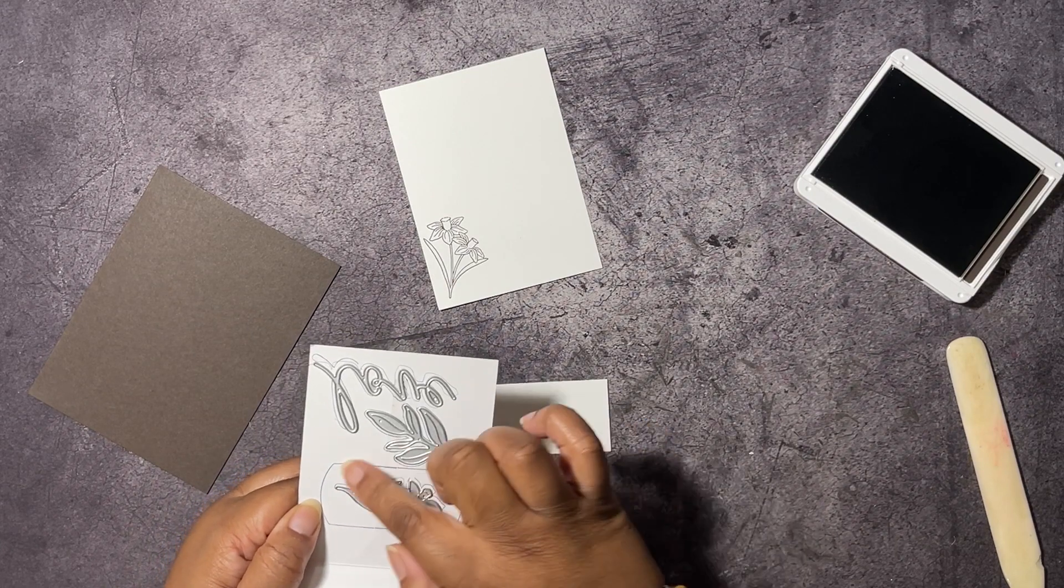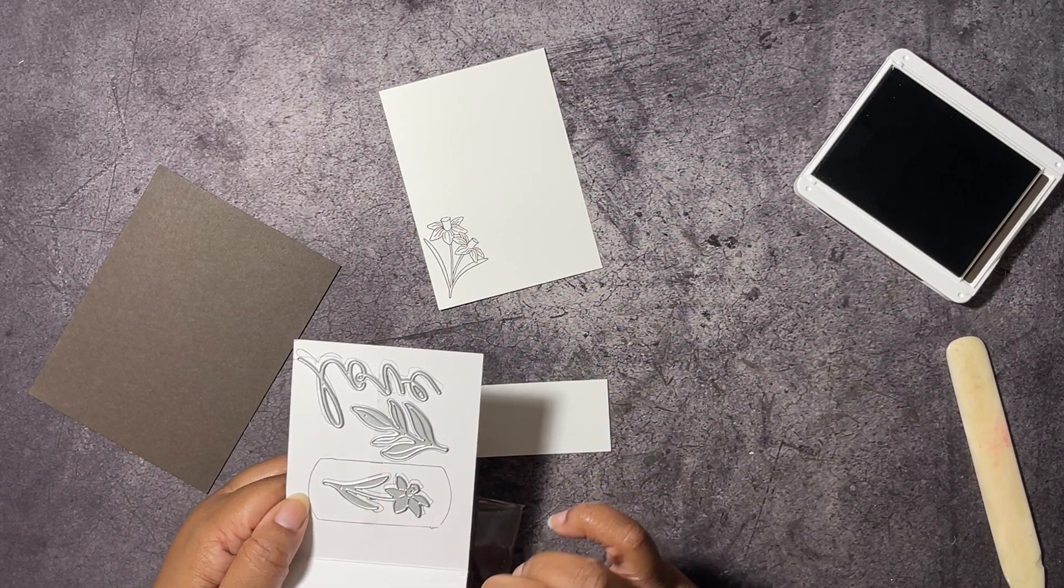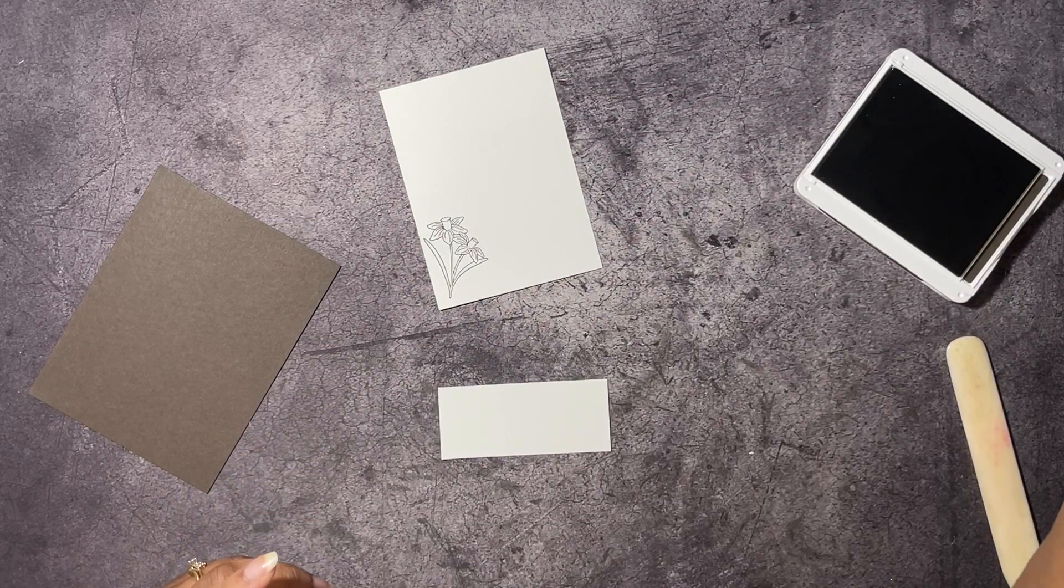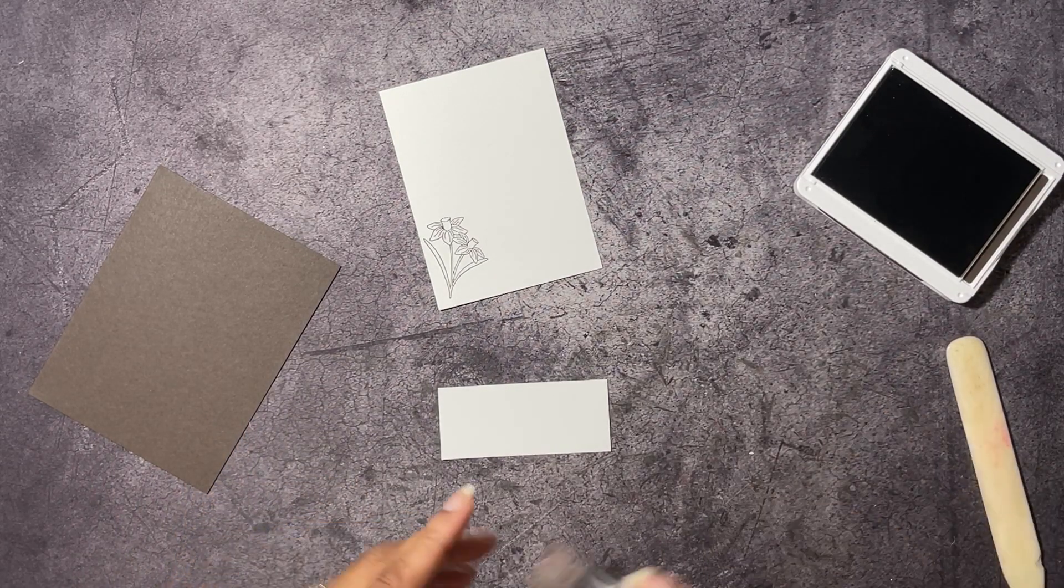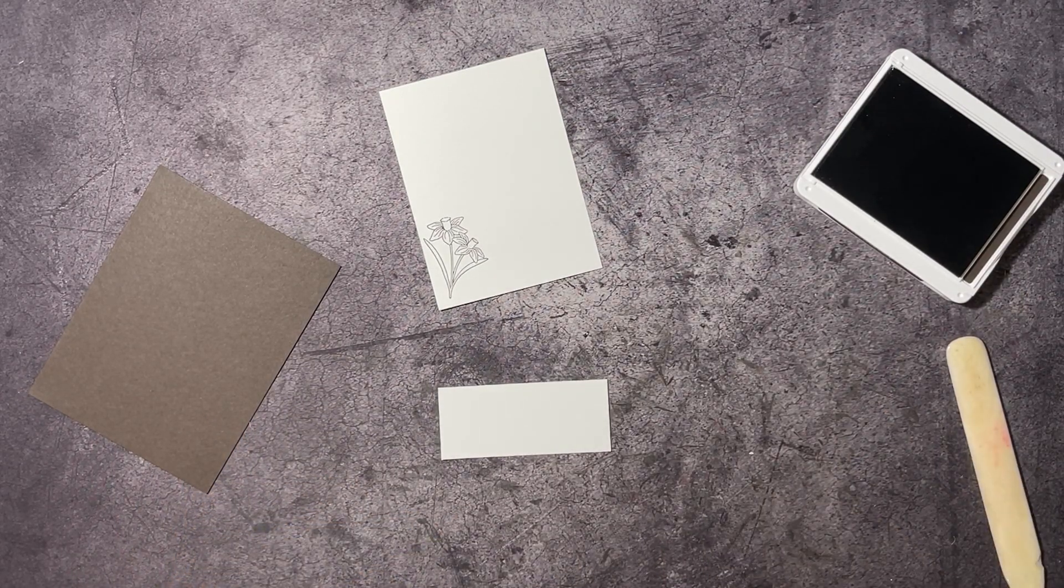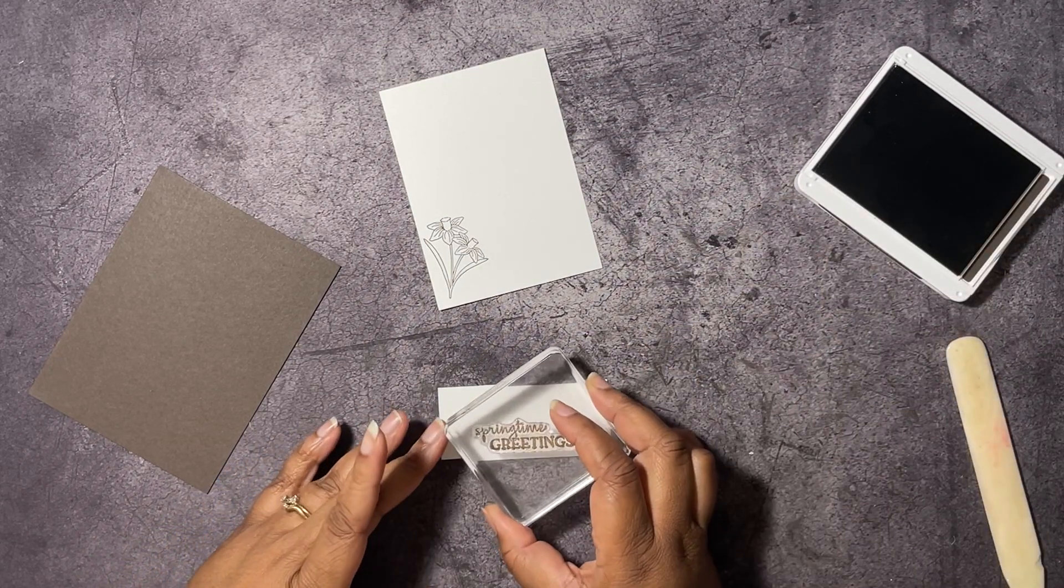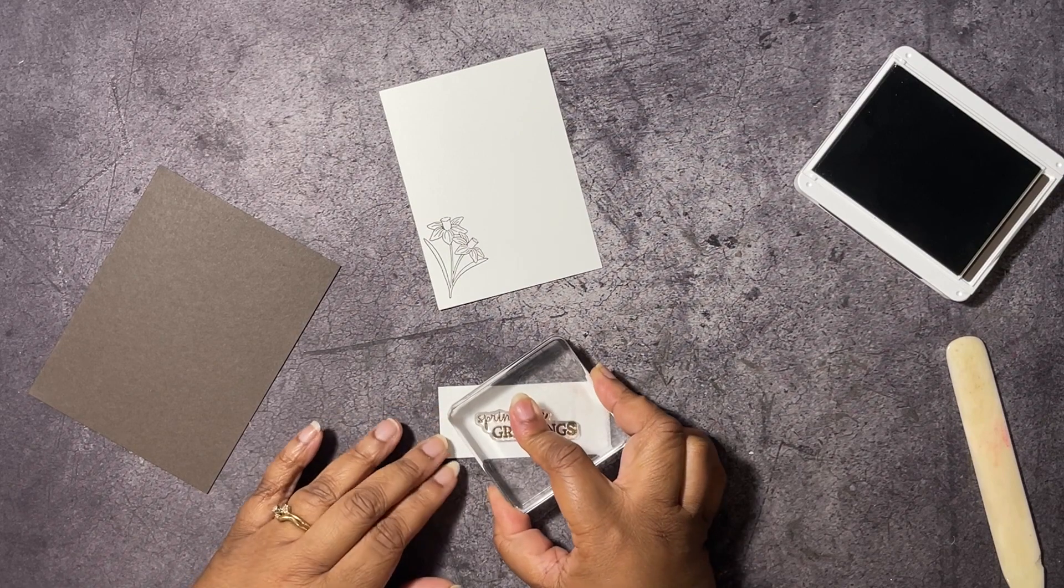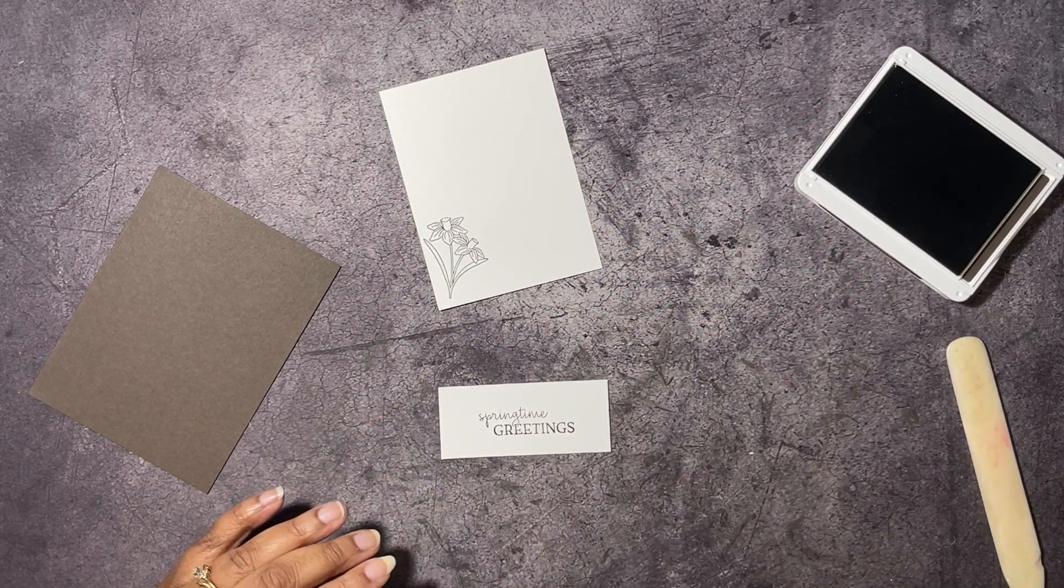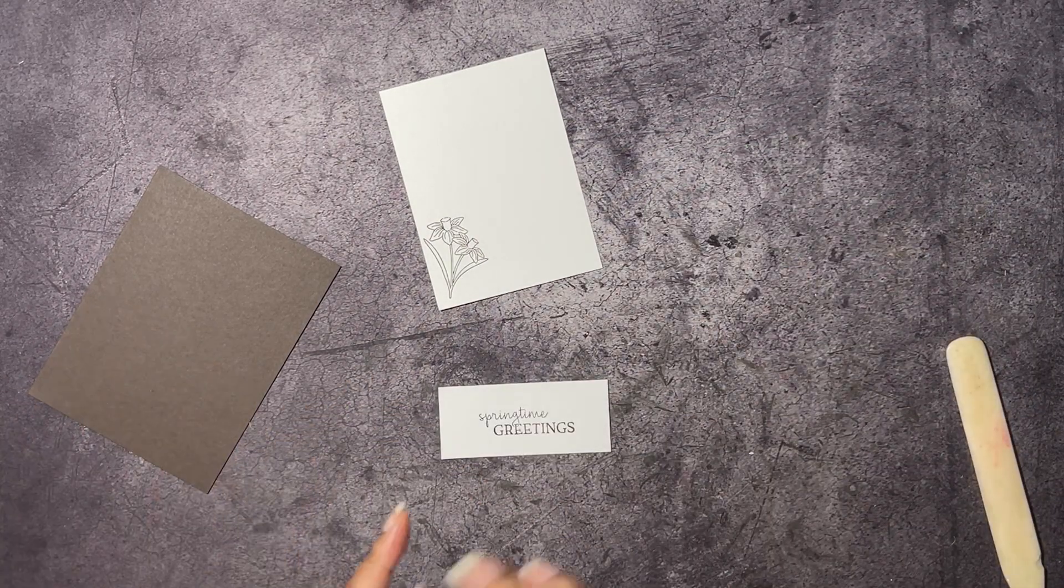These are the Love of Spring dies that coordinate with the Paper Pumpkin and we're going to be stamping Springtime Greetings from the kit. Just going to get that right there in the middle. Close up our ink because that's all of our stamping.